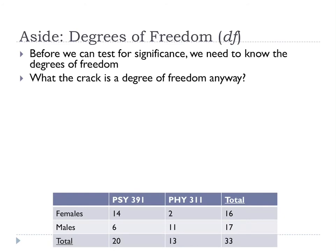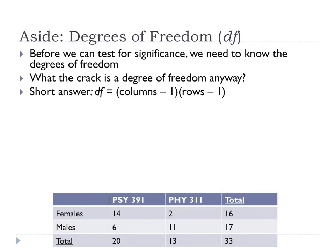The short answer for chi-square: degrees of freedom can be calculated by taking the number of columns minus 1, so 2 minus 1 equals 1, times the number of rows minus 1, so 2 minus 1 equals 1. Therefore, degrees of freedom equals 1 times 1, which is 1. On a chi-square, it's simply columns minus 1 times rows minus 1.